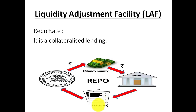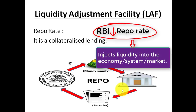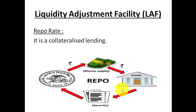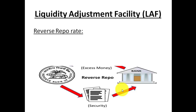The rate charged by RBI for this whole repo transaction is known as the repo rate. Whenever RBI decreases the repo rate, it injects liquidity into the system. So repo rate is basically known for injecting liquidity into the market, the banking system, and the economy. Whenever RBI wants to increase the money supply, it decreases the repo rate.